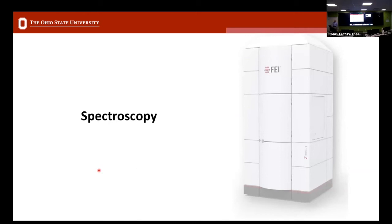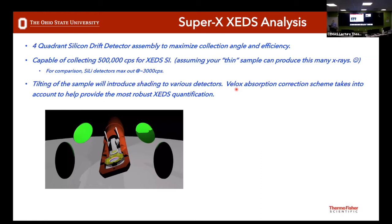Moving to spectroscopy — I want to talk about SuperX EDS and EELS briefly. Our SuperX system has the TEM holder and sample surrounded by four detectors filling the space around the sample, allowing half a million counts per second. For thin samples you can see the X-rays coming out because you have a nice solid angle, and for thicker samples you can still collect all those X-rays for really good quantitative counts. We use VELOX software, Thermo Fisher's proprietary software, which has a nice EDS processing tool and absorption correction scheme.